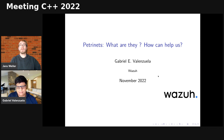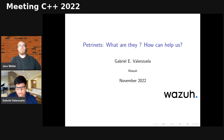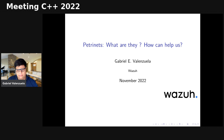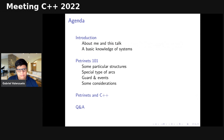We are live with the next talk at Mini C++ 2022. This time we are going to listen to a talk about Petri nets: what they are and how they can help us, by Gabriel Valenzuela. Welcome Gabriel, happy to have you at the conference. Please take it away.